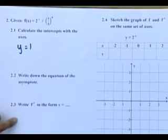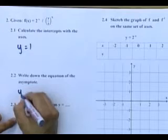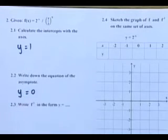Again, 2.2 they ask you, write down the equation of the asymptote. As the previous one, we know the asymptote is y equals to 0.